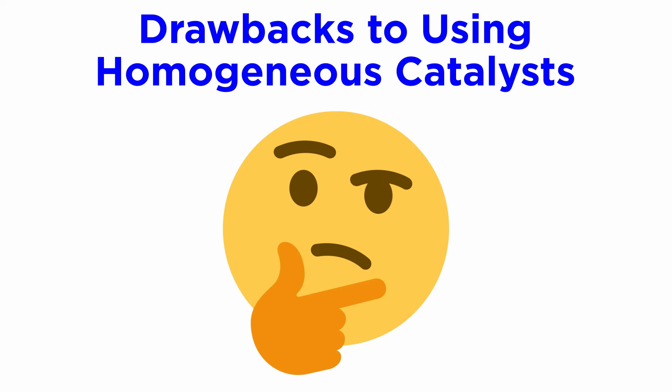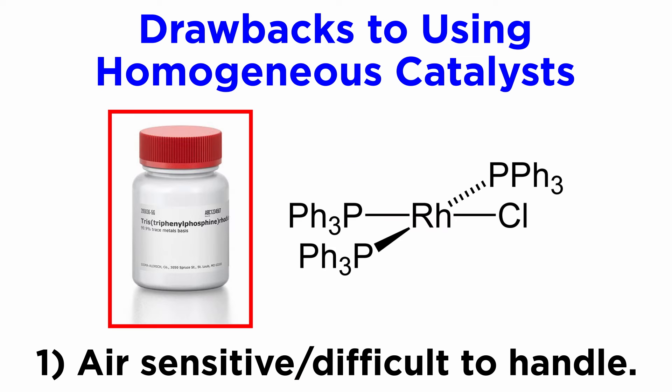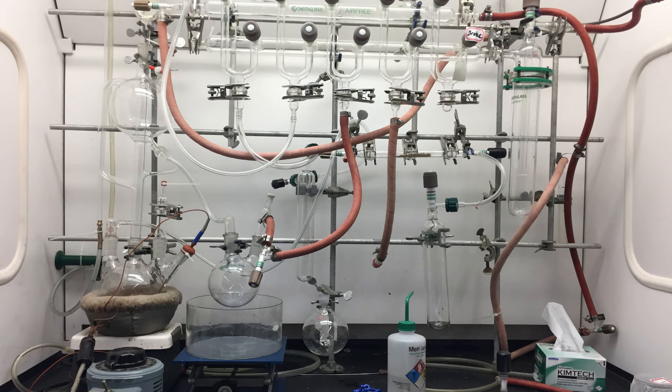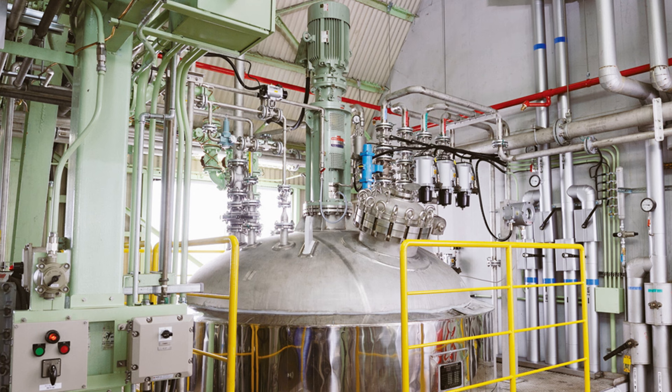There are of course numerous drawbacks to using homogeneous catalysts. For one, they tend to be very air sensitive and difficult to handle. They often have to be prepared and stored under argon gas because of their extreme reactivity with oxygen, and they have to be handled using specialized inert techniques by experienced chemists. In the lab, this is not a major problem because of the availability of Schlenk technology, vacuum and argon lines, or glove boxes. But in large-scale industrial settings, inert atmosphere can be very costly, as it requires sophisticated systems far beyond a simple argon line.